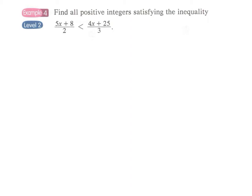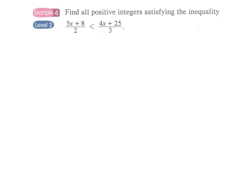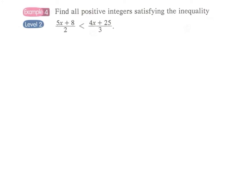Example number four. Since we have two fractions here, we simply do something to remove both denominators. That is, we can multiply both sides by the LCM of all the denominators, which is six.